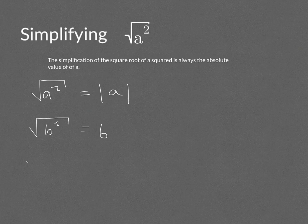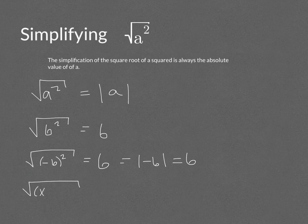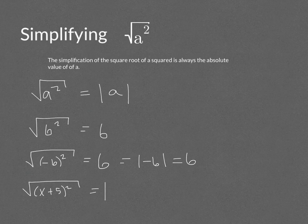If you have the square root of negative 6 squared, negative 6 squared is 36 and the square root of 36 is 6, so we really had the absolute value of negative 6. With a variable like x plus 5 squared, the square root and the square cancel out, but since the result is always positive, the final answer is the absolute value of x plus 5.